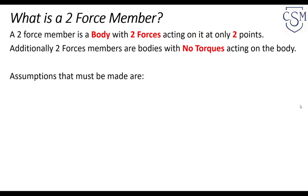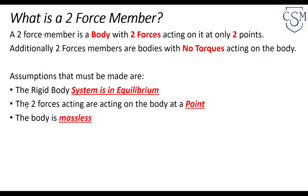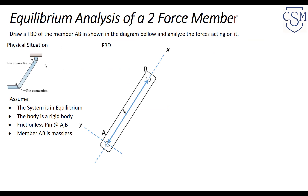The assumptions that must be made to call a member a two-force member are that the system is a rigid body in equilibrium, that the forces are acting only at a point — so they are point loads — and that the body is massless. If there are two other forces acting on a body besides the weight, then this assumption can be concluded from that, but we must assume that the body is massless.